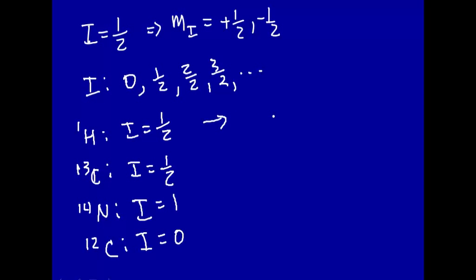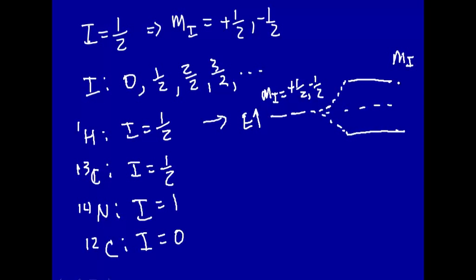Let's look at a spin one-half nucleus. In the absence of a magnetic field, you have two different values of m sub i — m sub i equals plus one-half and minus one-half — and these are degenerate. When you put this nucleus in a magnetic field, these energy levels split: now m sub i equals minus one-half is the higher energy state and m sub i equals plus one-half is the lower energy state. Note this is reversed compared to the case of an electron, where the higher energy state had m sub s equal plus one-half. This may change depending on other factors, which we'll talk about shortly.